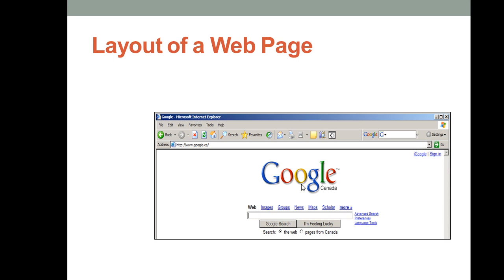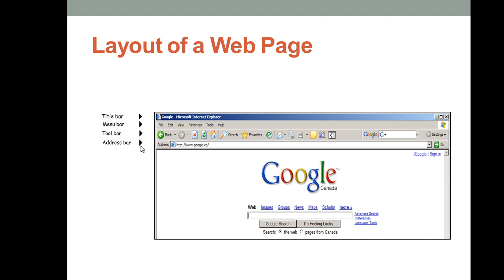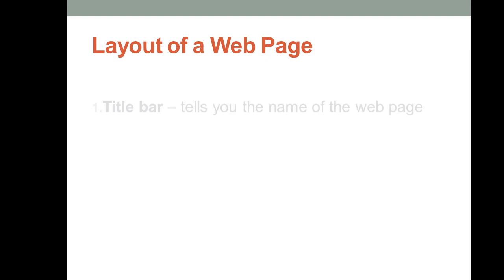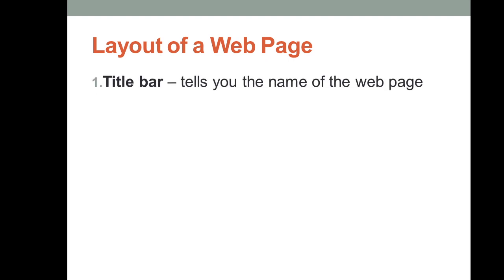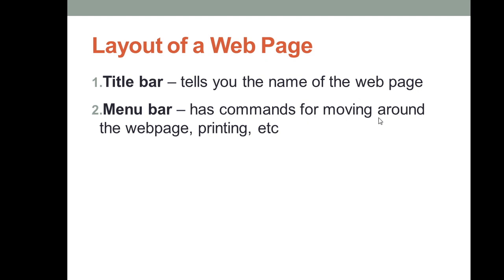I use Google Chrome but I have taken a screenshot of Internet Explorer so you can understand the layout of a webpage. Here, this one is the title bar and this one is the menu bar where a number of menus are available. This is the toolbar where a number of tools are available and you can access them by clicking. The title bar tells you the name of the webpage and the menu bar gives you commands for moving around the webpage.